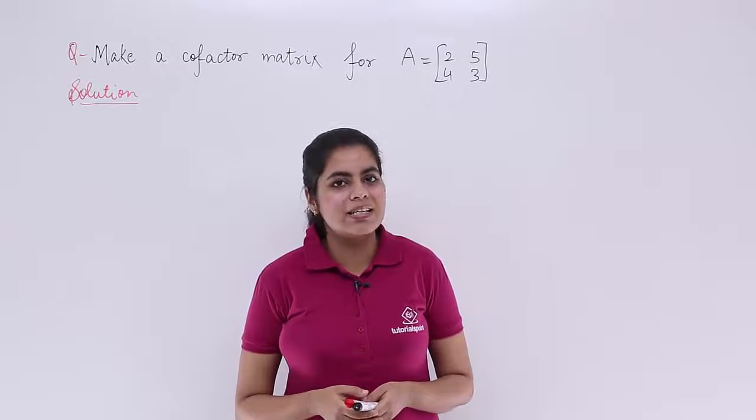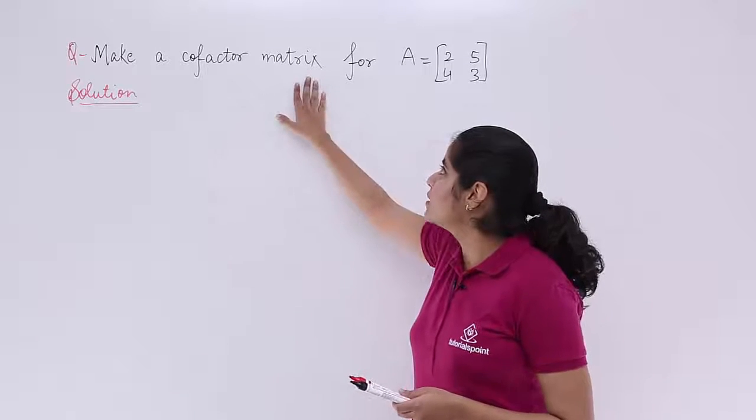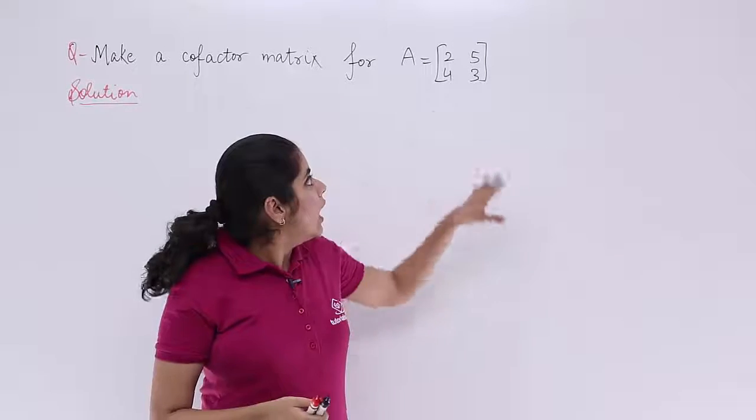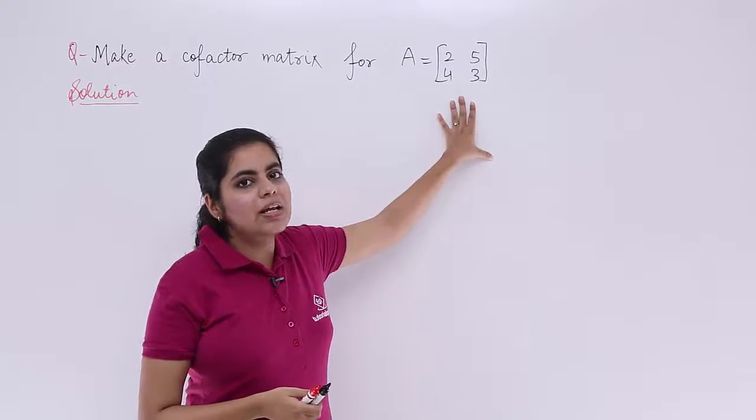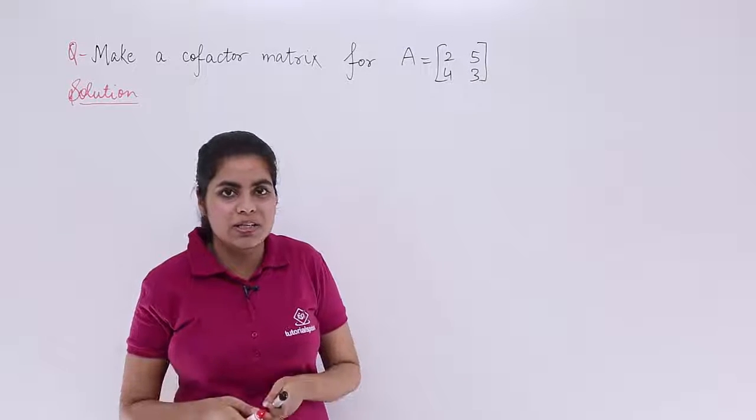Let's see what the question has to say and let's get started with the solution. The question says make a cofactor matrix for a given matrix, and that given matrix as you can see is A matrix, 2, 5, 4, 3 are the elements of this matrix.